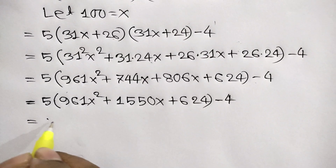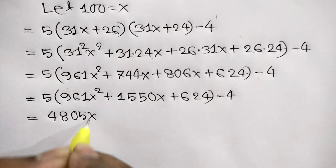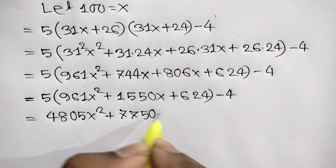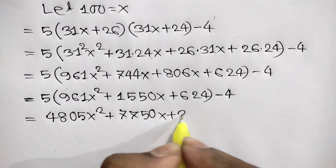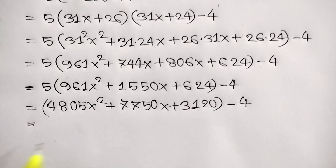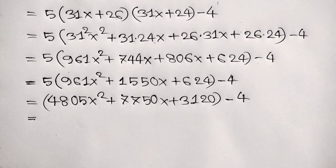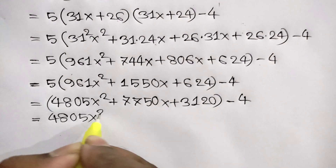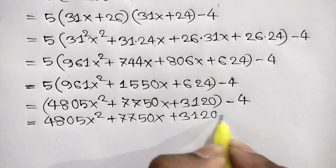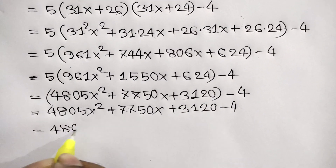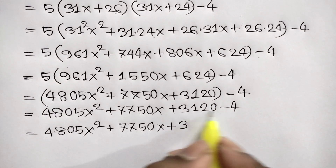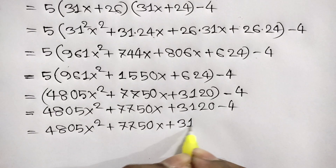So we get 5 times 961x squared is 4805x squared, plus 5 times 1550x is 7750x, plus 5 times 624 is 3120, and minus 4 gives us 4805x squared plus 7750x plus 3116.